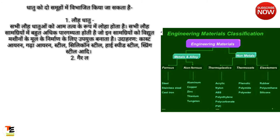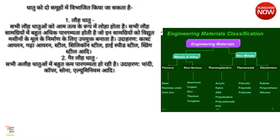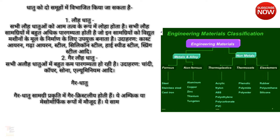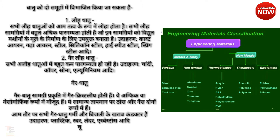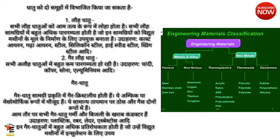Udaharan: cast iron, gadha iron, steel, silicon steel, high speed steel, spring steel aadi. Do: ger loha dhatu — sabhi ger loha dhatuon mein bahut kam paragamyata hoti hai. Udaharan: chandi, copper, sona, aluminium aadi. Ger dhatu — ger dhatu samagriyan prakrti mein ger crystalline hain.